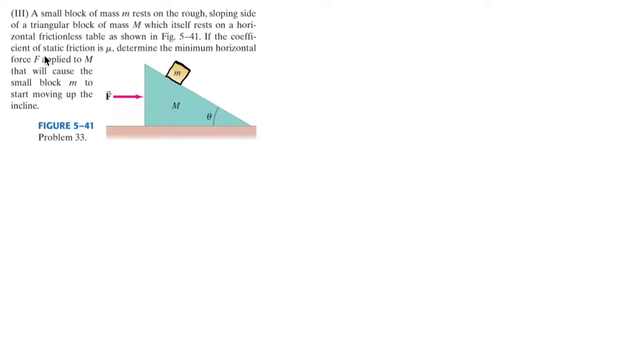Here we have a challenging problem. A small block of mass m rests on the rough sloping side of a triangular block of mass capital M, which itself rests on a horizontal frictionless table, as shown in figure 5.41. If the coefficient of static friction is mu, determine the minimum horizontal force F applied to uppercase M that will cause the small block m to start moving up the incline.